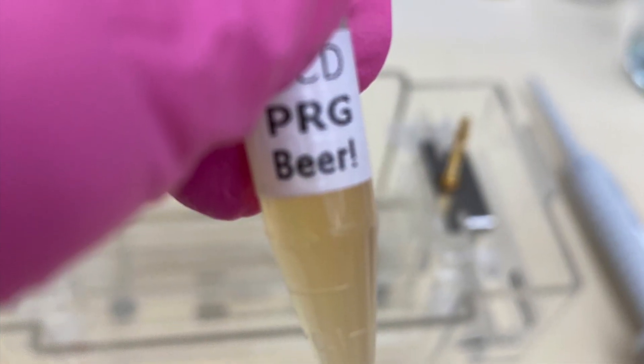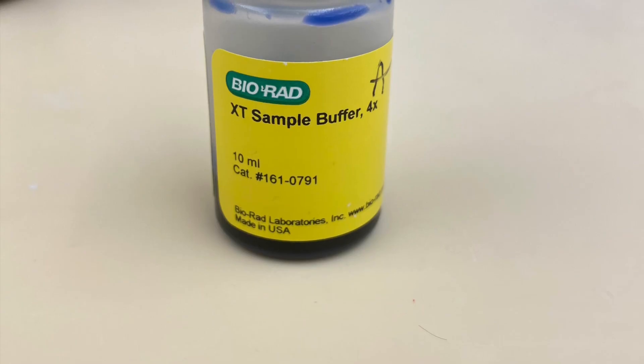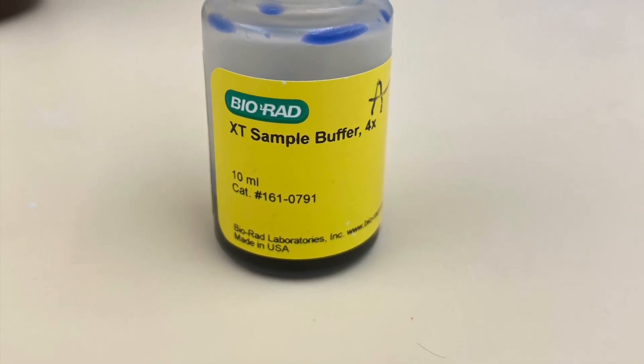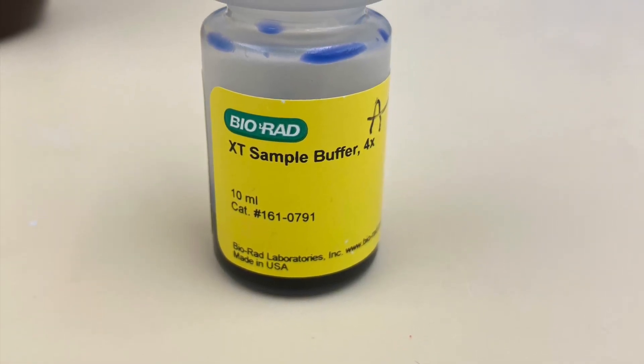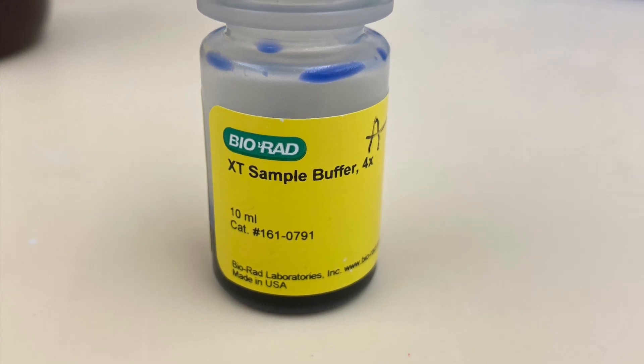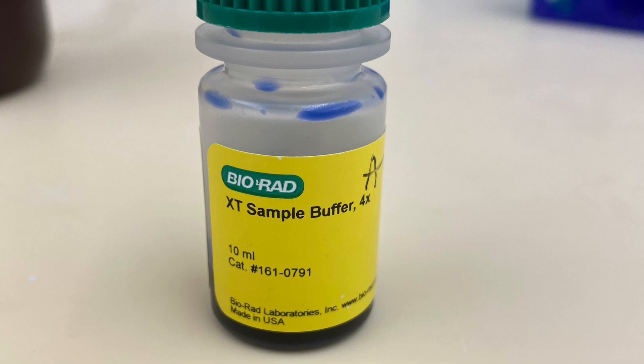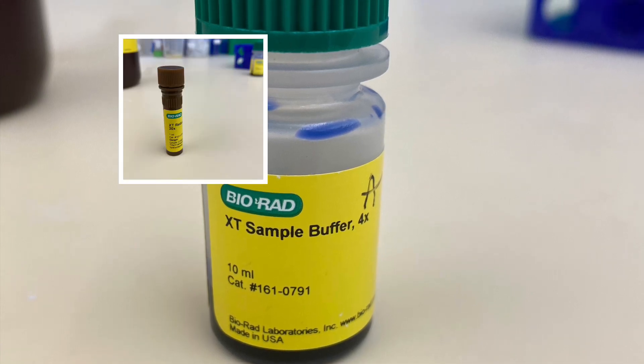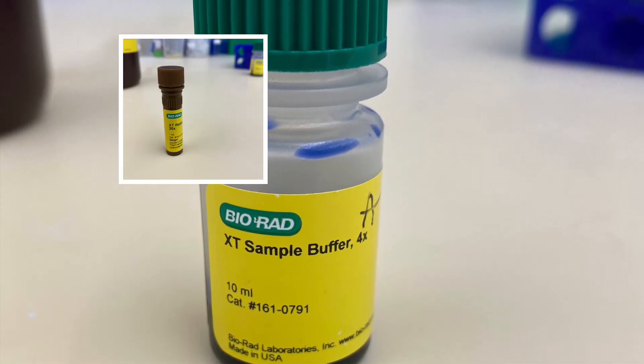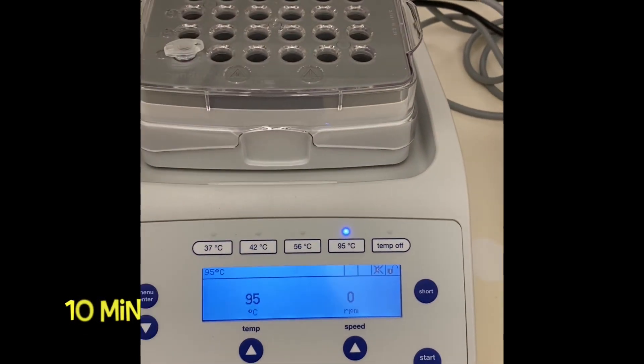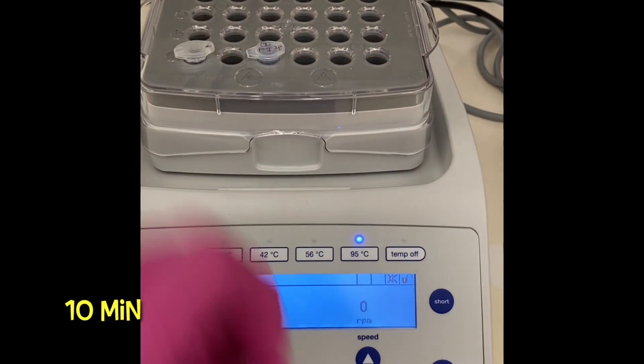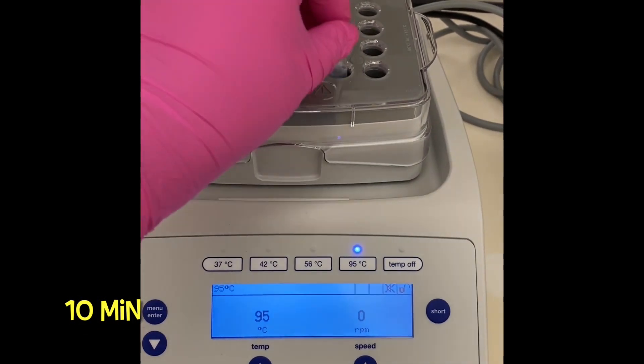Say hi to my beer sample here and I will be mixing it with the sample buffer just like you are doing Western Blot. I'm using XT system from BioRad in my lab so for a sample buffer I'm using XT sample buffer and mixing it with the XT reducing agent. When I mix my sample I will be boiling it for 10 minutes in order to break those disulfide bonds.